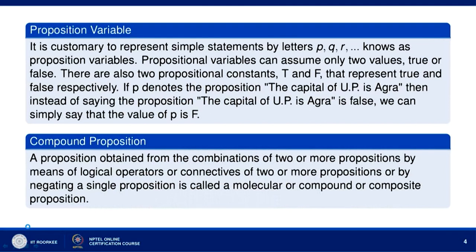Now let us define propositional variables. It is customary to represent simple statements by letters P, Q, R, known as propositional variables. Propositional variables can assume only two values: true or false. There are also two propositional constants, T and F, representing true and false respectively. If P denotes the proposition 'the capital of UP is Agra', then instead of saying that proposition is false, we simply say that the value of P is F.